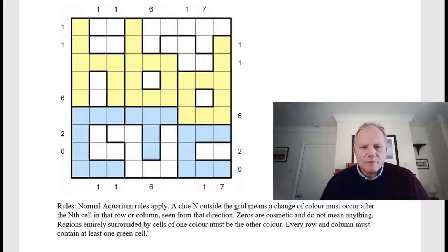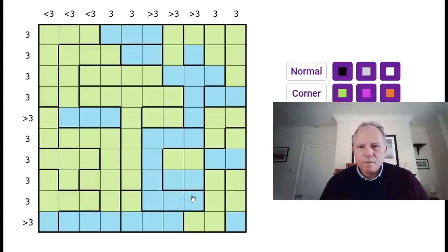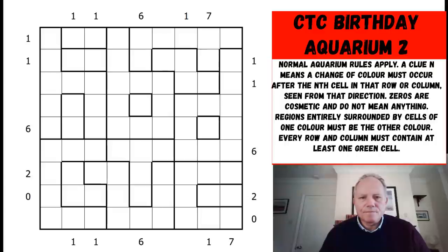A couple of other bits of cluing. Regions entirely surrounded by cells of one color must be the other color. Every row and column must contain at least one green cell this time, not one blue cell. Let's have a look at the puzzle, which is here. And let's get cracking with this one.